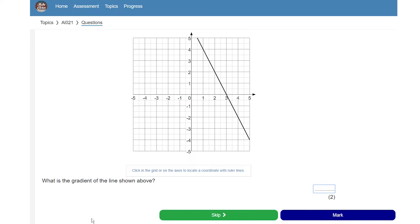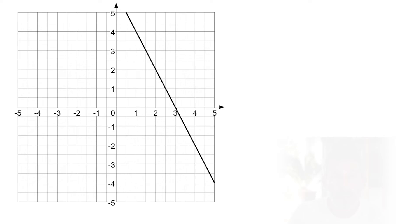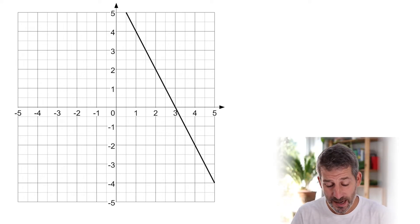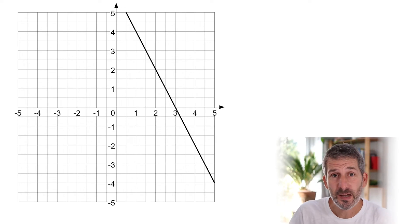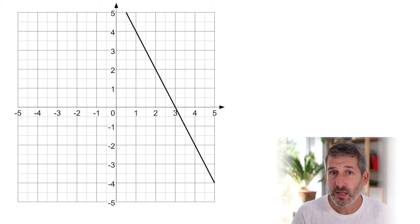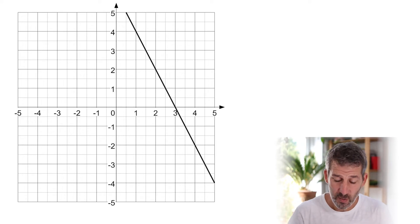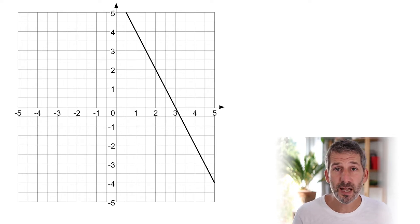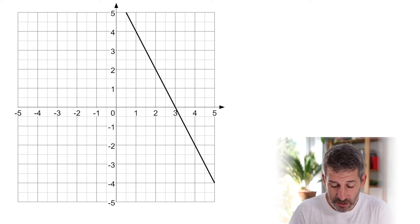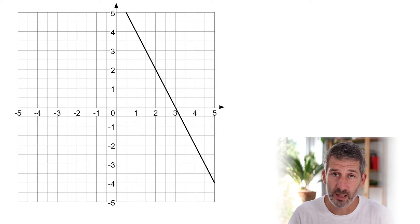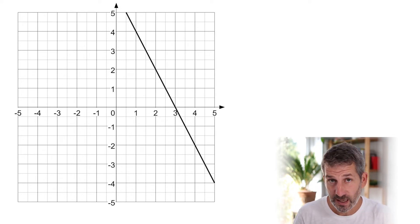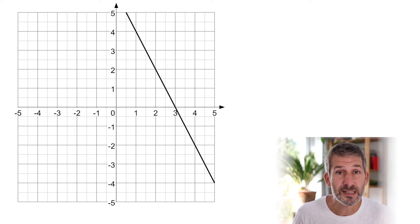In this question, we're being asked to find the gradient of a line. The first thing to notice is that it's sloping down from left to right — that tells us it's going to have a negative gradient. This is just like correlation: when a line slopes that way, we say it has a negative gradient. So our answer must be negative; if it's not, we've made a mistake somewhere and need to go back and check.